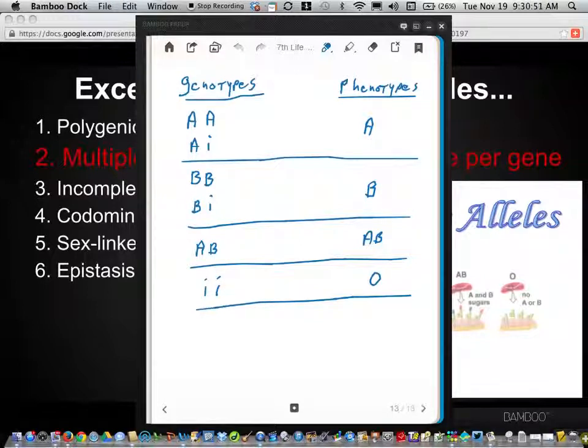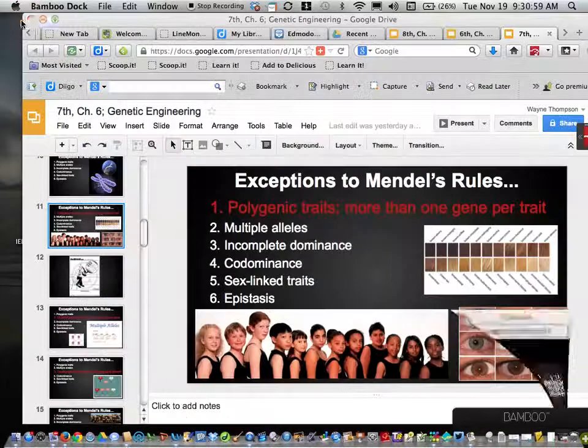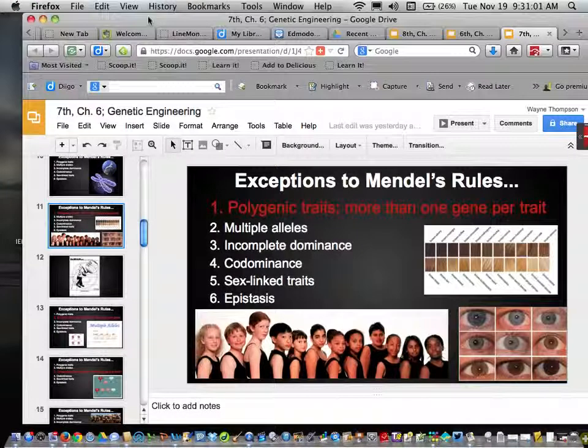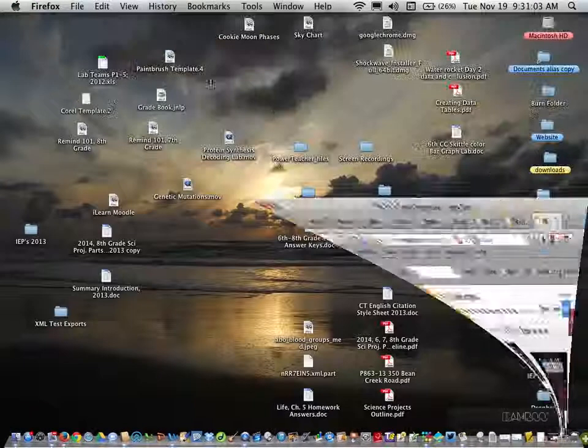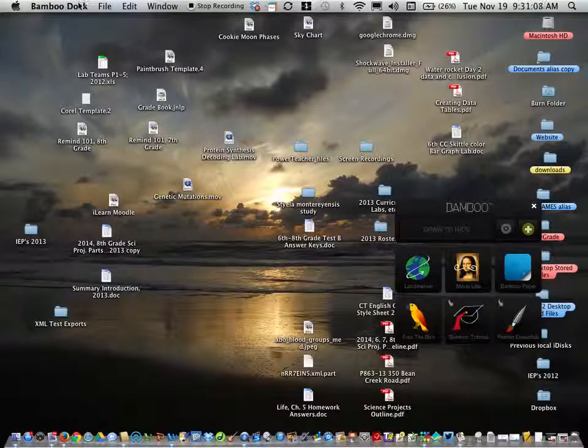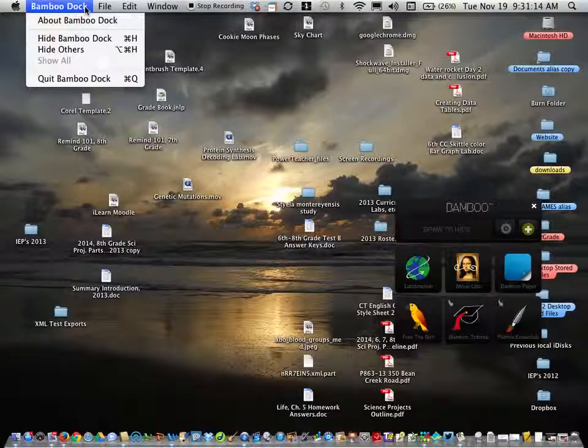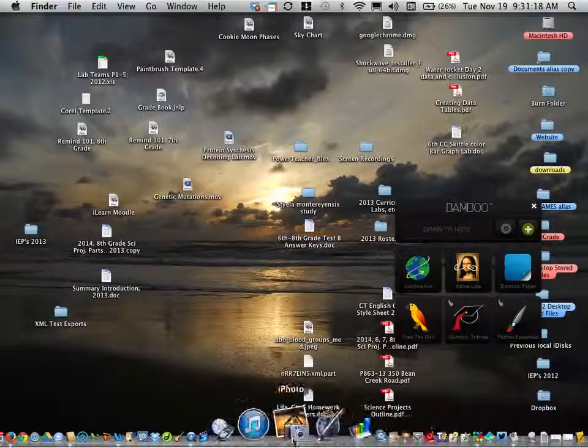So, that is the basics of how multiple alleles and codominance kind of go together in forming the blood type system that we have. And this blood coding system is one of several types, including the Rh factor and plus minus that go into making our blood system to what it is today.